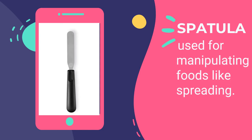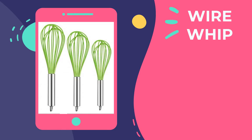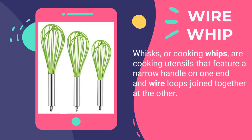Next is the spatula, used for manipulating foods like spreading. It has a broad, flat, flexible blade used to mix, spread, and lift foods, especially in cooking and decorating cakes. We also have wire whips — cooking utensils with a narrow handle and wire loops at the other end used to add air into a mixture or thoroughly blend ingredients. Wire whips are used to whip and aerate cream, meringue, and eggs, and to stir light sauces. They are made from professional-grade stainless steel and come in differing lengths.